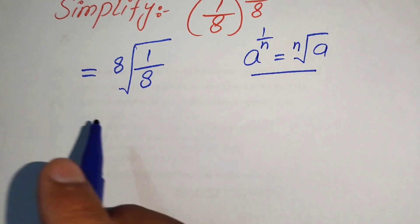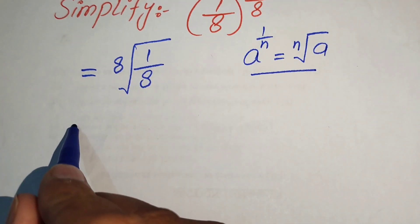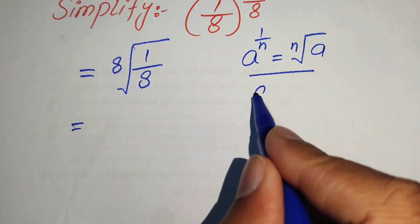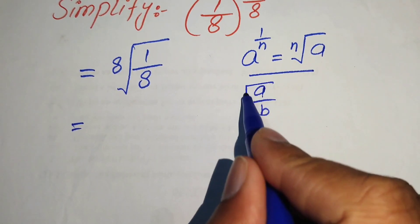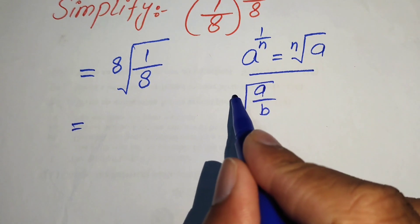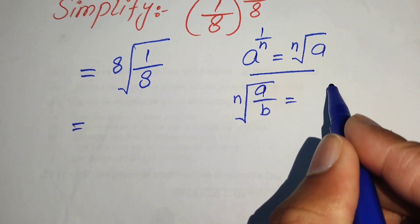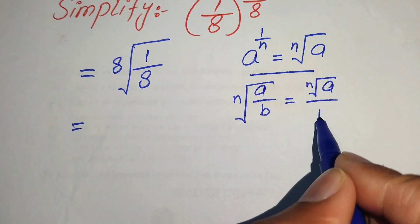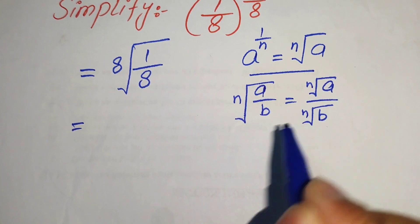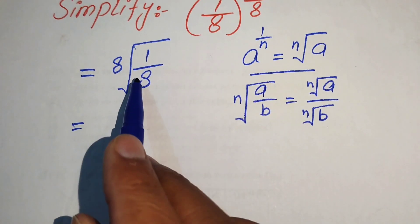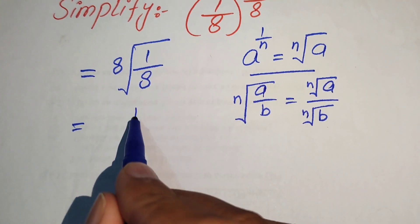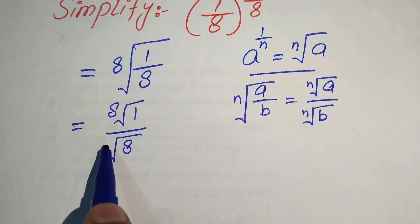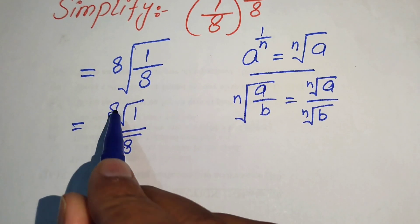Next we apply another radical formula: if we have a over b and its nth root, it is written as the nth root of a divided by the nth root of b. According to this formula, we write this term as the nth root of 1 divided by the nth root of 8.